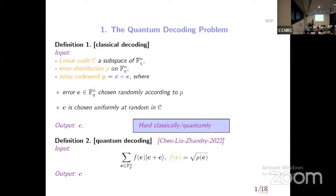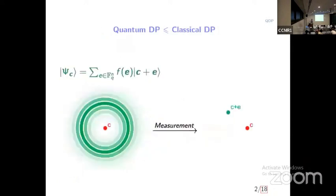Now let's look at a related problem that can be viewed as a quantum version of this problem. Instead of giving C plus E directly, for a given C I look at all possible noisy versions C plus E, take a quantum superposition over all possible noise values, and set the amplitudes so that if I measure this state, I get C plus E with exactly the right probability. Of course, this means the quantum problem is not harder than the classical one, since I can measure the state and solve it classically.